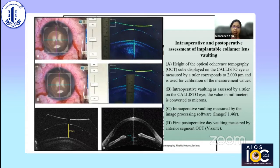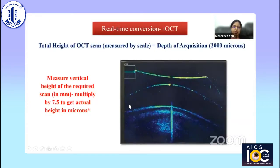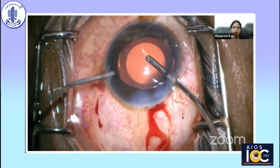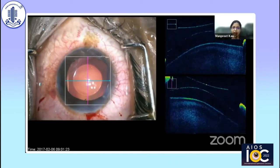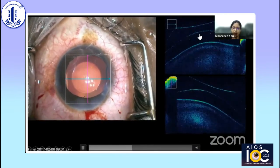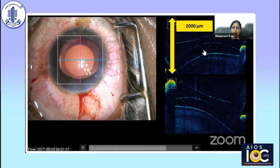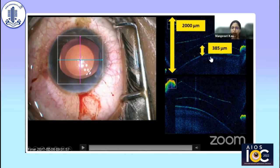We devised a scale to measure on-table vault. The depth of acquisition of the OCT used — Rescan 700 (previous version) — is 2000 microns, and the height of the screen is 265 millimeters, equivalent to 2000 microns. We came up with a conversion factor of 7.5: multiply the measurement in millimeters by 7.5 to get the actual vault in microns on the table. The central hole of the ICL acts as a landmark confirming you are measuring central vault. In one case shown, viscoelastic is being aspirated after ICL implantation, and the vault can be assessed on the table.